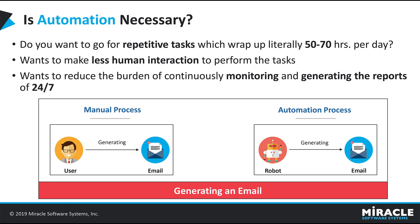Is automation necessary? We encounter repetitive tasks which can take up literally 50 to 70 hours per day. Sometimes we want less human interaction to perform tasks, and sometimes we need continuous monitoring and generating reports 24 by 7. In these cases, we mainly need automation. The importance of automation can be clearly explained using the example of generating an email.